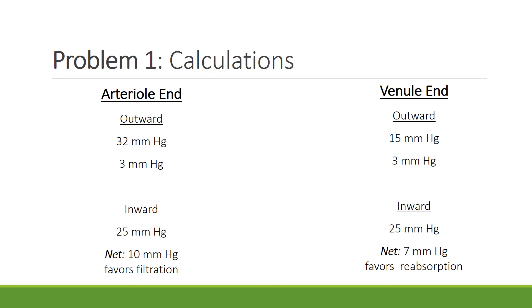Let's calculate the direction and magnitude of fluid movement at both the arterial and venule ends. At the arterial end, outward movement is 32 + 3 = 35 mmHg, and inward movement is 25 mmHg. The net difference is 10 mmHg favoring filtration, which is the outward movement. At the venule end, outward movement is 15 + 3 = 18 mmHg, and inward movement is 25 mmHg. The difference is 7 mmHg favoring reabsorption, or the inward movement of fluid.